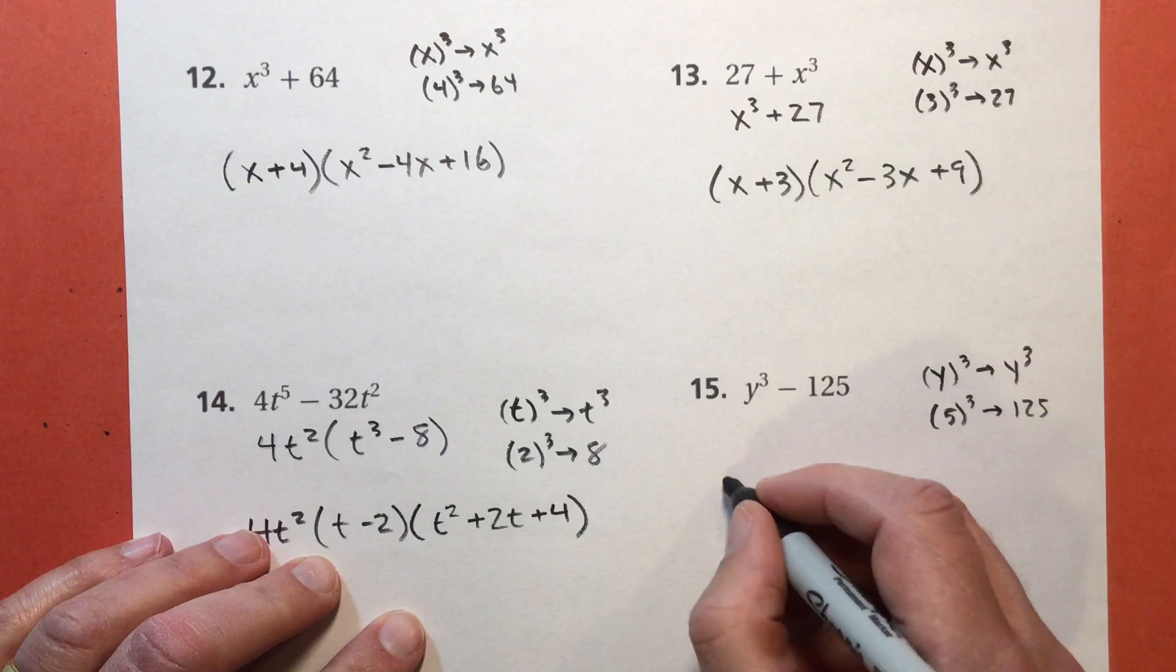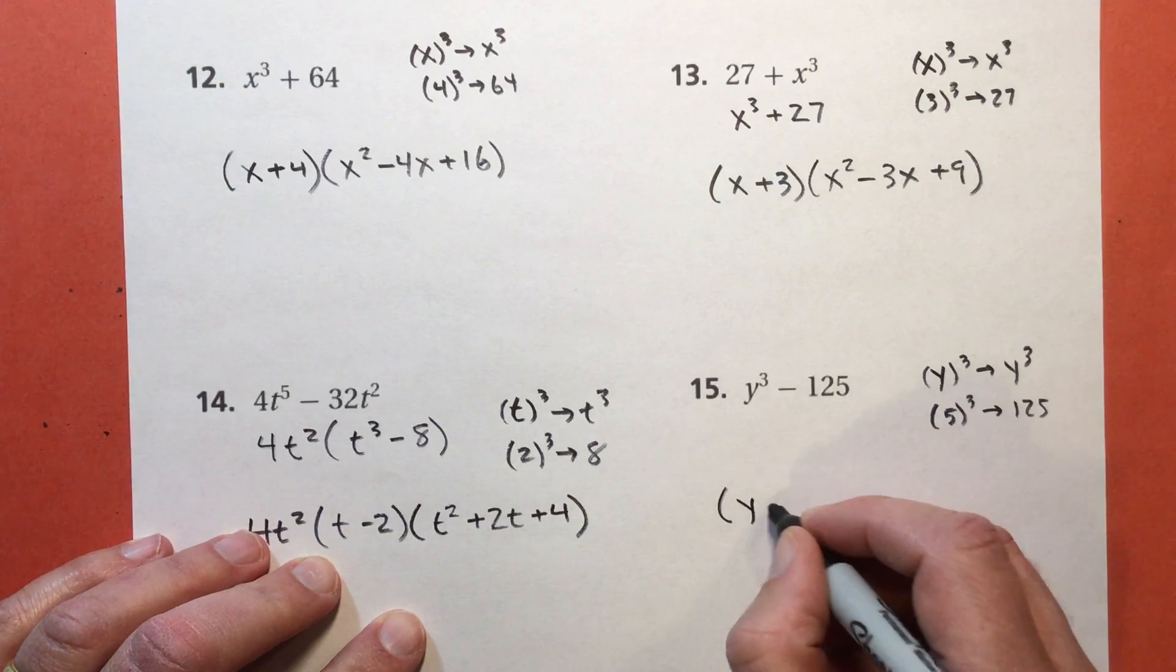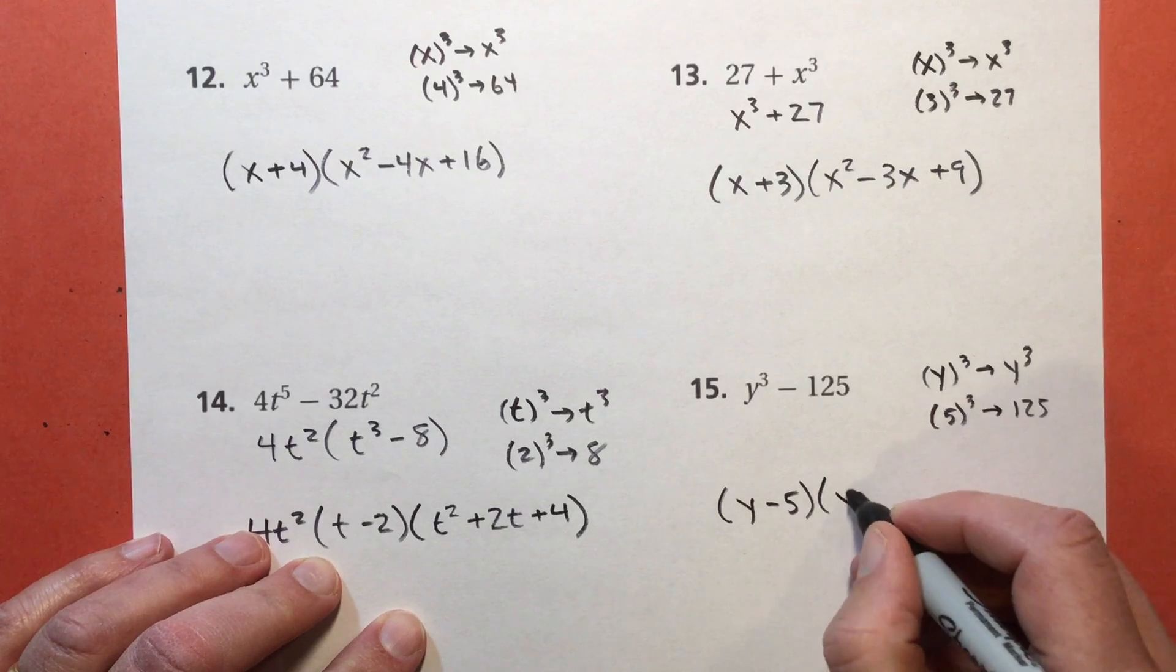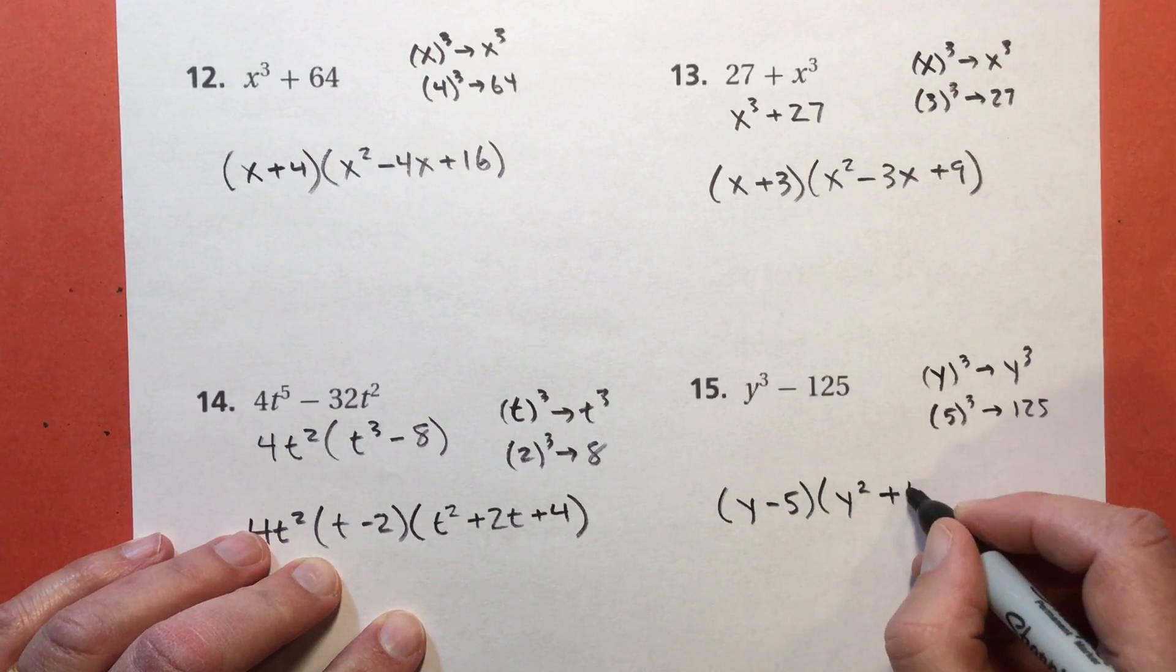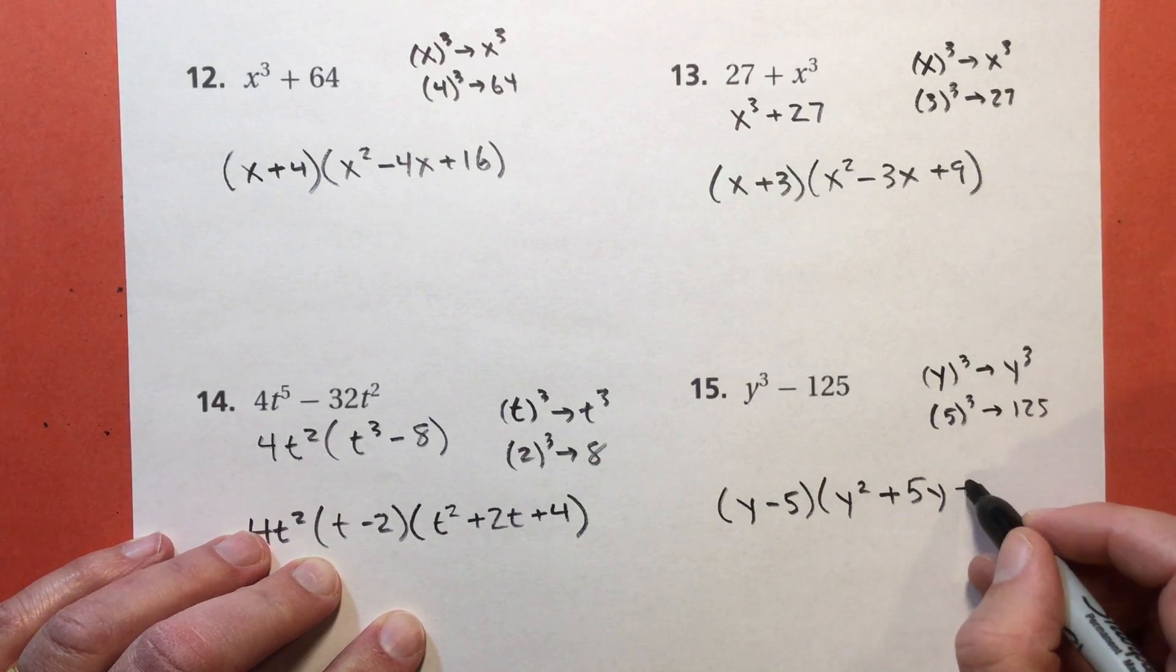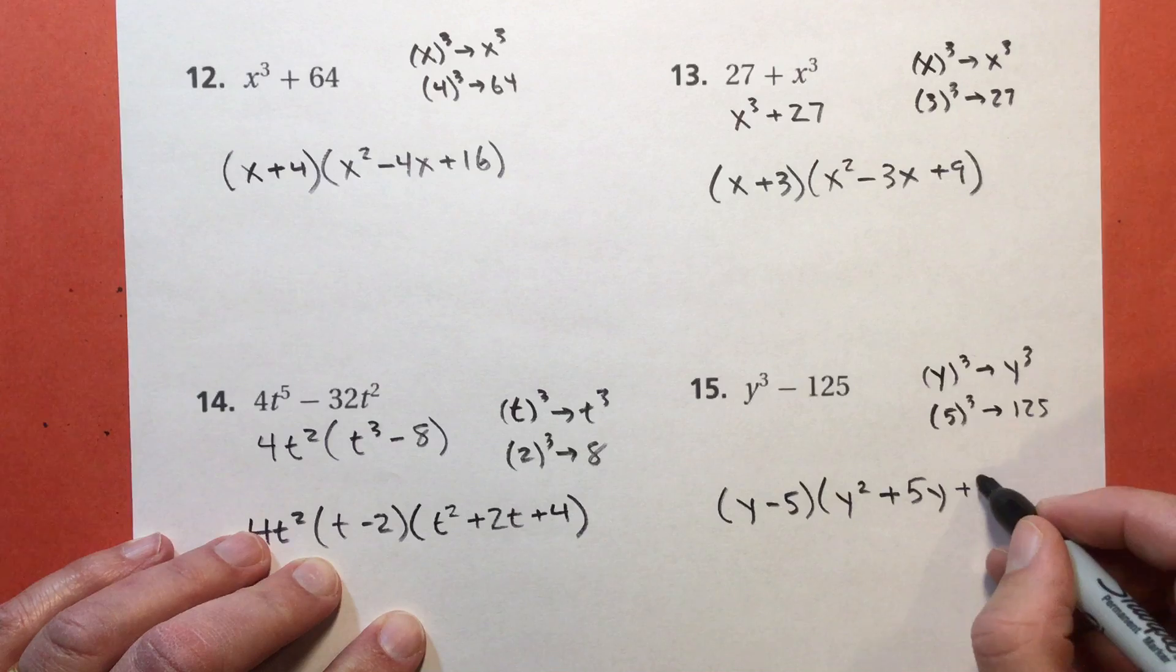So, this is difference. So I get Y subtract 5. Excuse me. Times Y to the second power. Plus 5 times Y. That's that 5 times that Y. Plus 5 squared, which is 25.